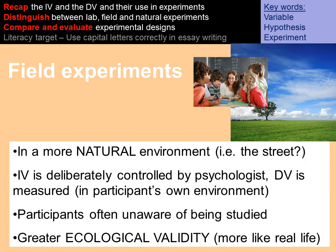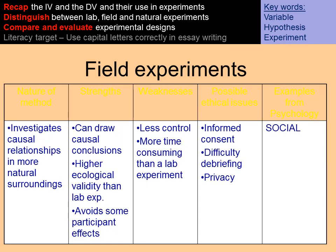A field experiment is in a more natural environment — for example the street or a school. The IV is still deliberately manipulated and the DV is still measured in the participants' own environment. Participants are often unaware that they're being studied, which gives it greater ecological validity. You can still draw causal conclusions from a field experiment — cause and effect between the IV and the DV — and it also has high ecological validity. It avoids some participant effects because participants don't know they're being studied and therefore don't change their behavior. However, it is less controlled and the likelihood of an extraneous or confounding variable impacting the cause and effect relationship is much higher than in a lab experiment.